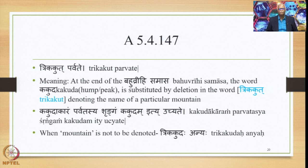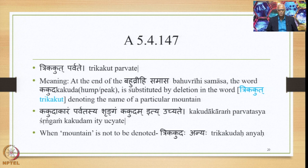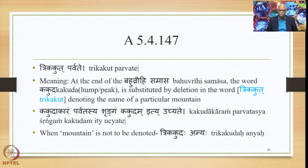Let us go to 5.4.147, Trikakut Parvate. What it means is that at the end of the Bahuvrihi Samasa, the word Kakuda meaning hump or peak is substituted by deletion in the word Trikakut, denoting the name of a particular mountain. The peak of the mountain which looks like a hump is also called Kakuda. When a mountain is not to be denoted, we do not delete the final A and we say Trikakudah — somebody who is having three humps. But when the Parvata is to be denoted, the final deletion happens and we get Trikakut. This is a Nipatana Sutra.